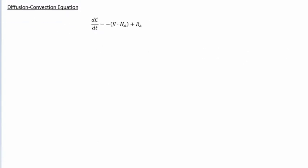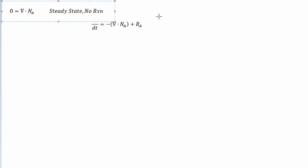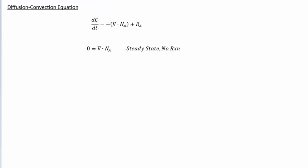The other way of solving this problem is using the diffusion-convection equation instead of a generalized mass balance. This is your diffusion-convection equation. You make the same assumptions: steady state, so the unsteady term cancels out; no reaction, so the reaction term cancels out — giving you divergence of total flux equals zero. We also assume no advection, so N_A equals J.